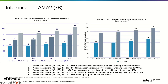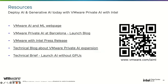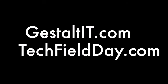Across all input token sizes and up to three instances per socket, the system can deliver inference with an average latency under 100 milliseconds — which is the acceptable threshold for chatbot responsiveness. For more resources, visit vmware.ai.ml, which is the main site with lots of links on these subjects. Thank you.